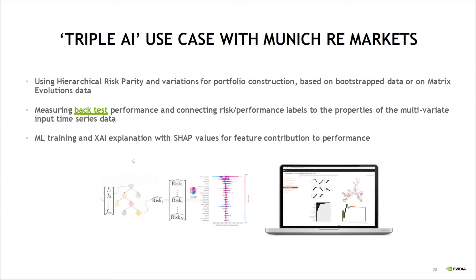We call this approach in marketing speak a 'Triple AI', because we use a pipeline of different machine learning and AI approaches. We look at the hierarchical risk parity performance and want to understand in which data situations this model works really well, and when you might prefer another model like equal risk contribution, naive risk parity, or most diversified portfolio. All these risk-based portfolio construction algorithms can be analyzed and compared in this framework.